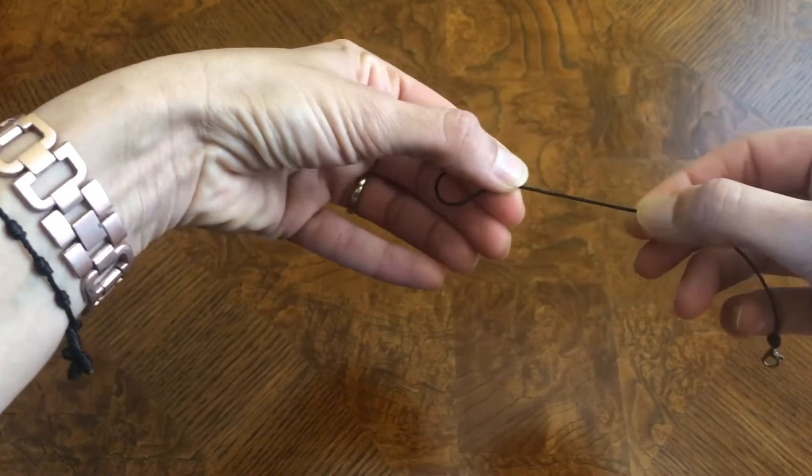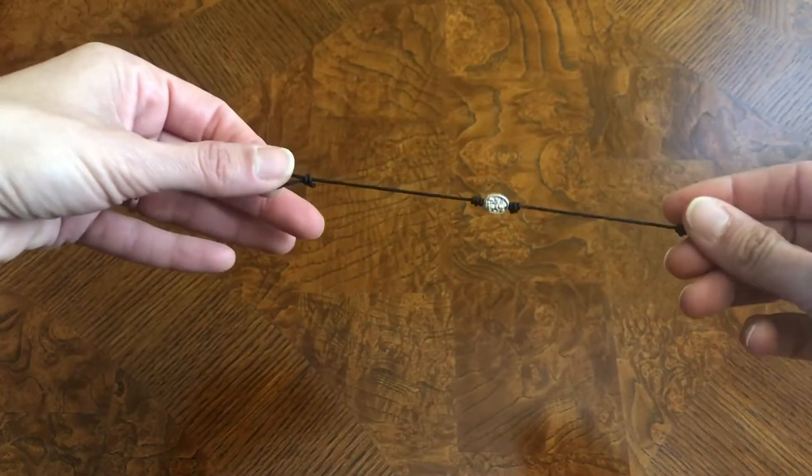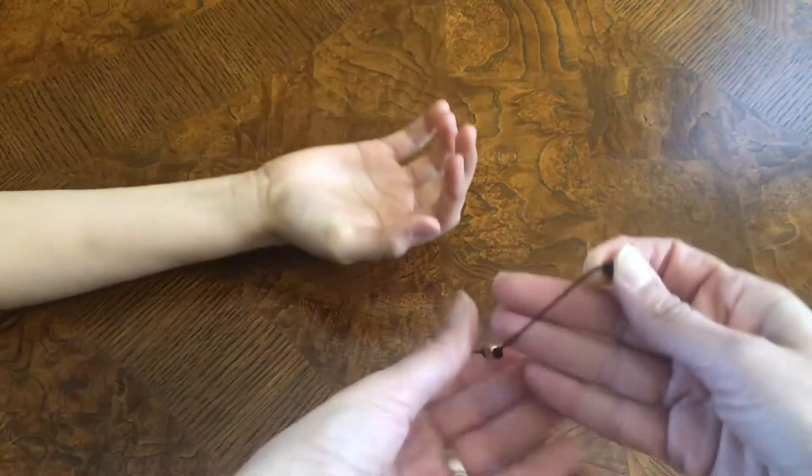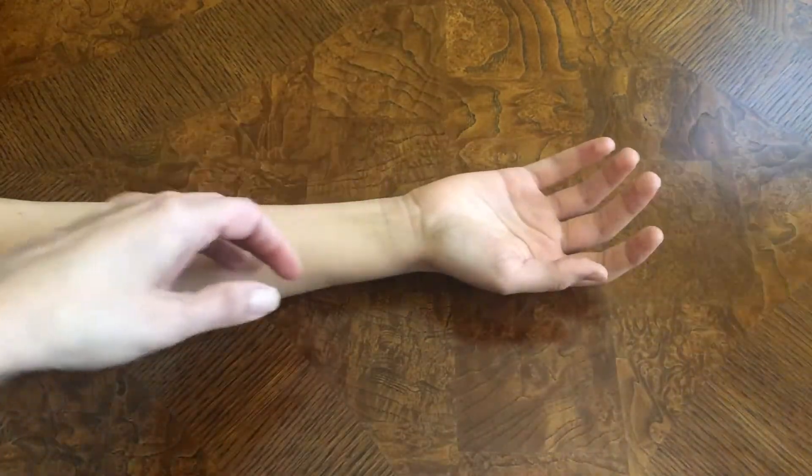As you slide this knot down, you can see that it makes the bracelet longer. So this is how you figure out how to put it in place. I'll show you on a wrist how to do that.